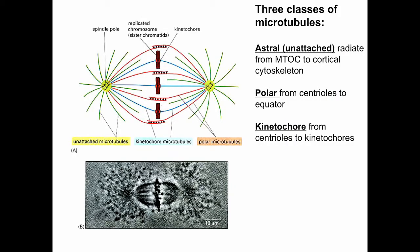We understand there are three classes of microtubules. There are astral microtubules that radiate from the microtubular organizing center out towards the cortical cytoskeleton, and that's what would be shown like this.